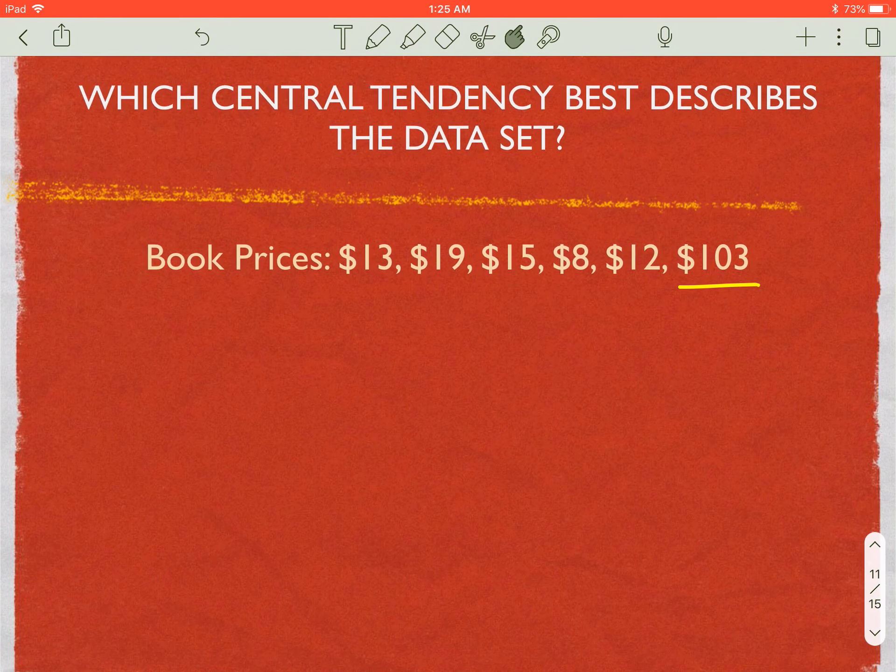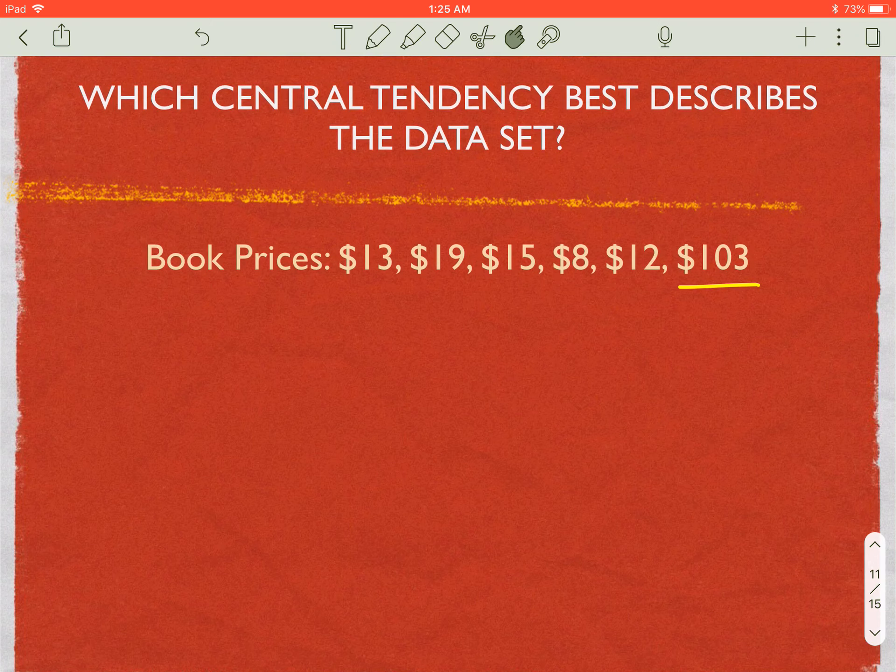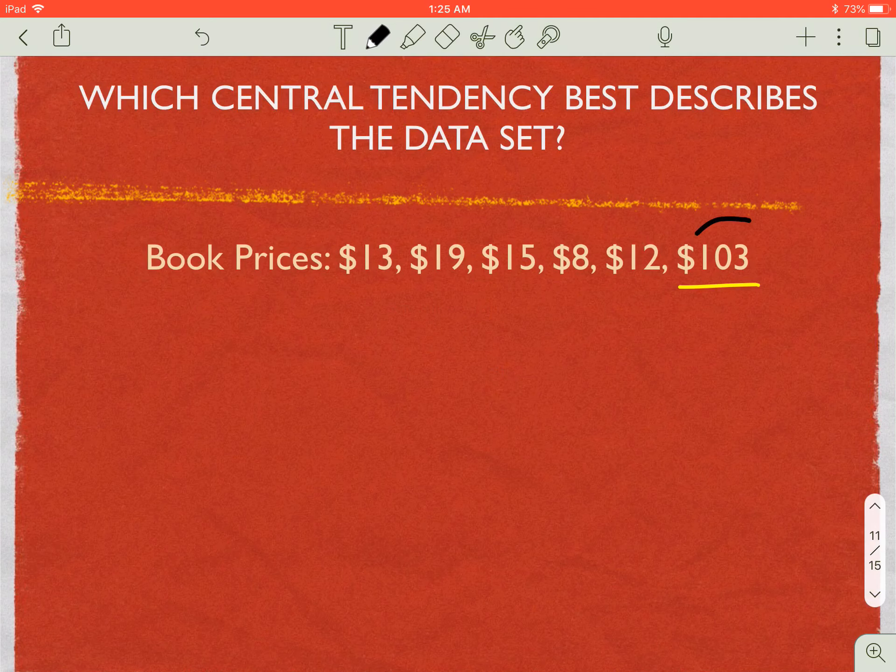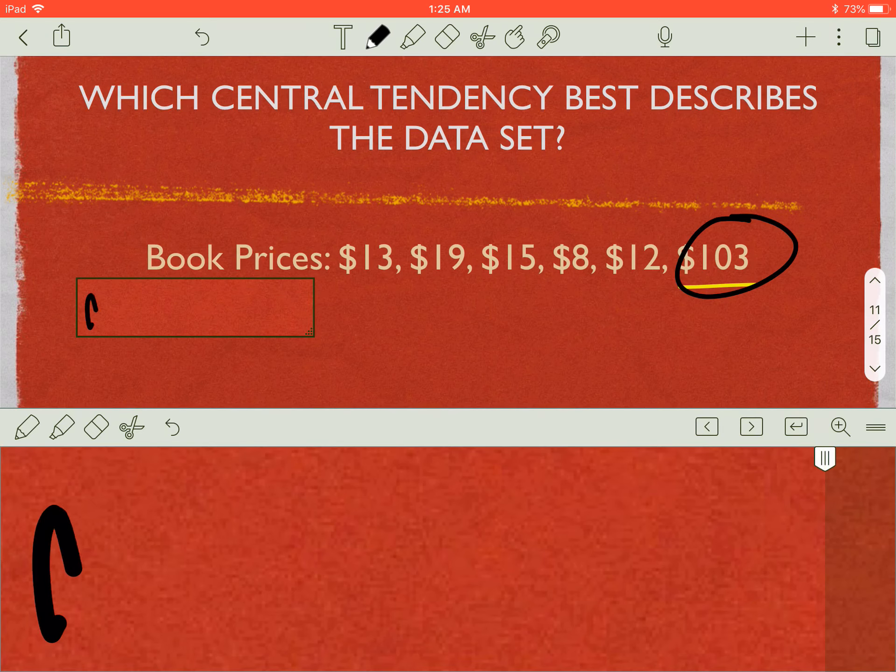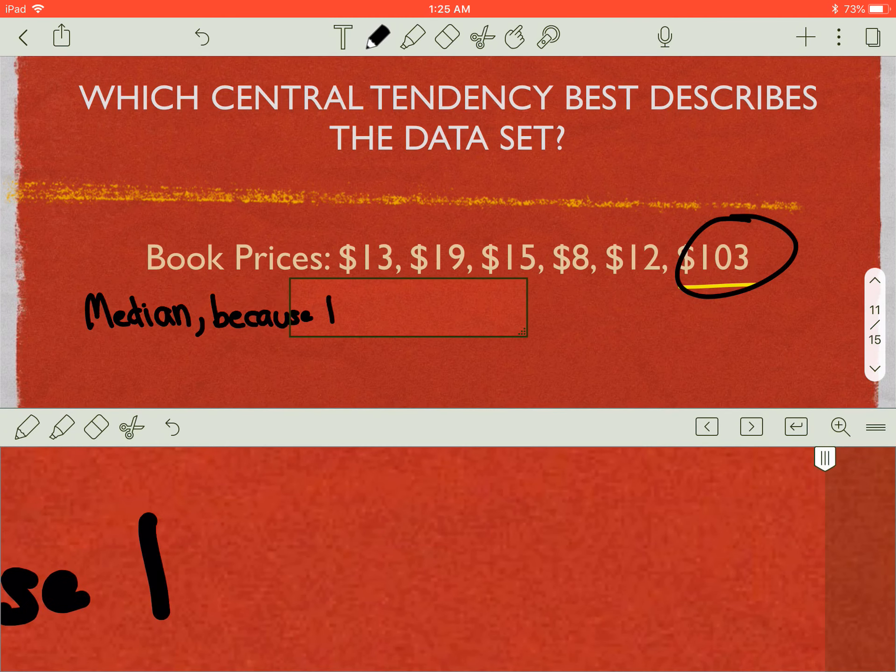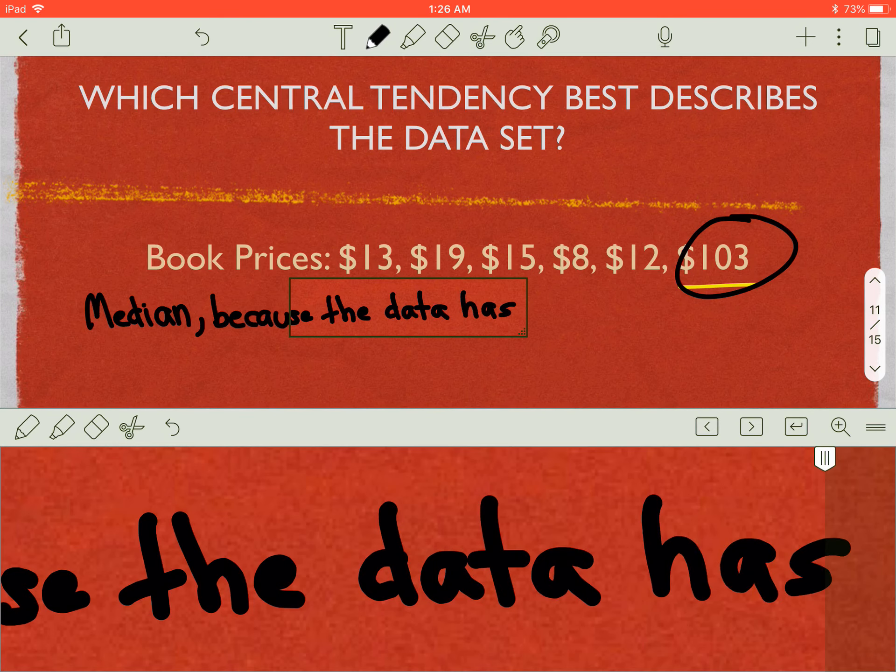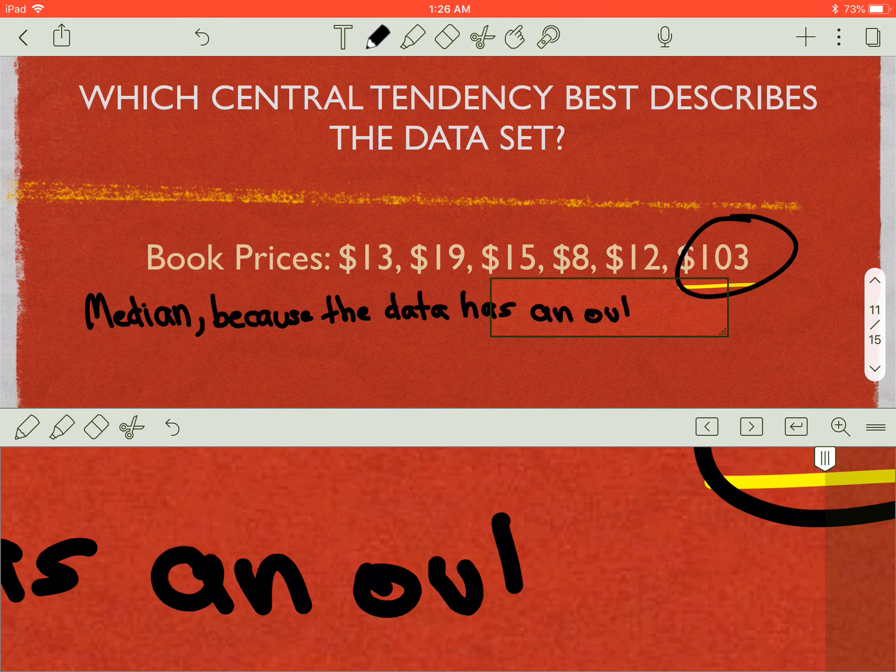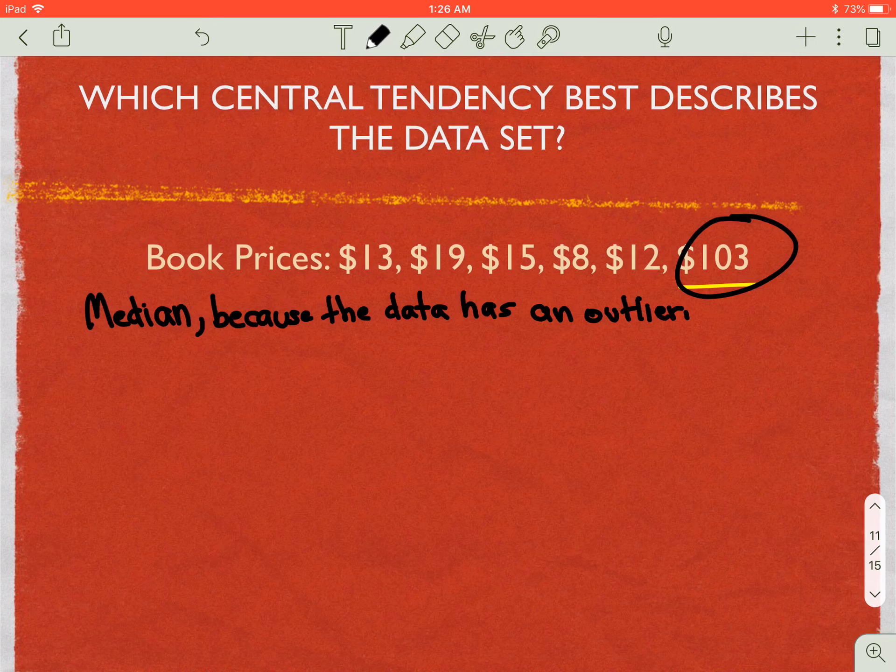Here we have the book prices: 13, 19, 15, 8, 12, and 103. I apparently left the 103 in an underline. The 103 is our outlier. So what best describes this data set? This would once again be the median. And why is it the median? Because the data set has an outlier. Just that simple.